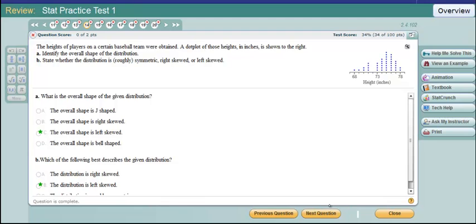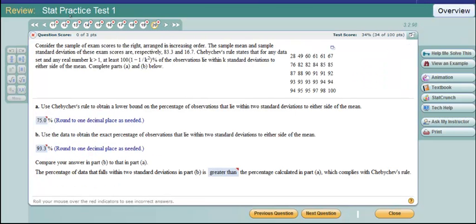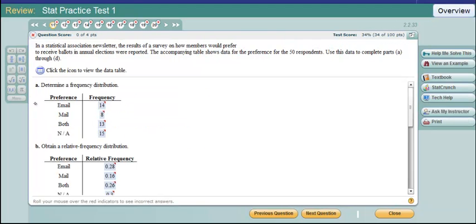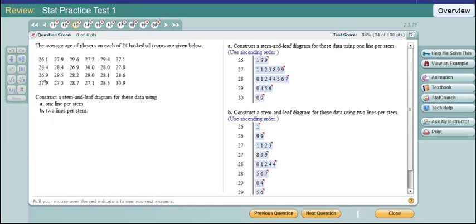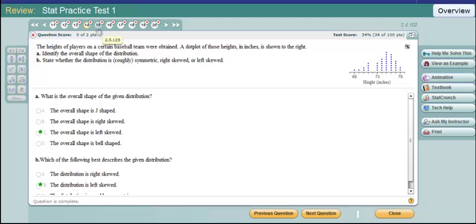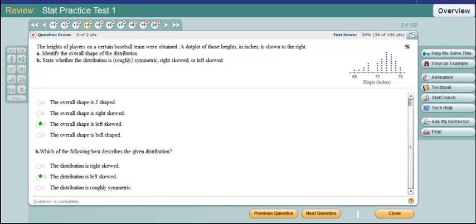Next question. So we have a dot plot here given of heights and inches for baseball players on a certain team, and there you see their heights there. Discuss the basic shape of it. Well, if you look at it, it's basically coming up with a longer tail. It's more grouped in the right, and the tail's off to the left. So that would be what we call left skewed. Overall shape is left skewed. The distribution is called left skewed then. So the right or left determines where the long tail is. So the longer tail, more stretched out on the left, more bunched on the right.